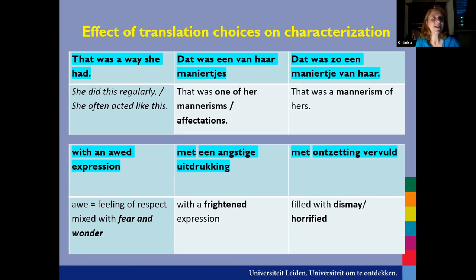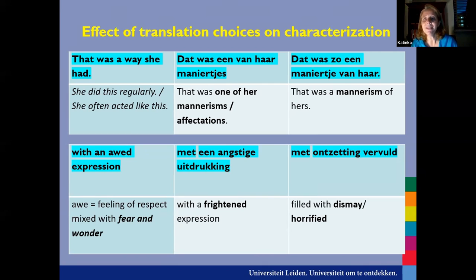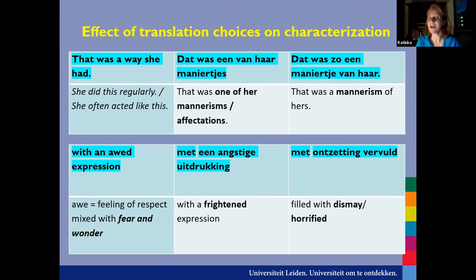The phrase 'that was a way she had' — which is fairly neutral, meaning she did this regularly, she often acted like this — becomes 'een manier chip on her' in Dutch, meaning it becomes a mannerism. So it is much more negative in translation.